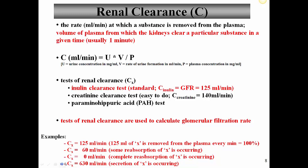If a substance has a renal clearance of about 630 mL/min — greater than the normal GFR of 125 mL/min — this means more of the substance is making it into the urine than initially entered the filtrate. This indicates secretion is occurring. So if clearance exceeds the normal GFR, some secretion of that substance is taking place. This is an important concept both clinically and physiologically.